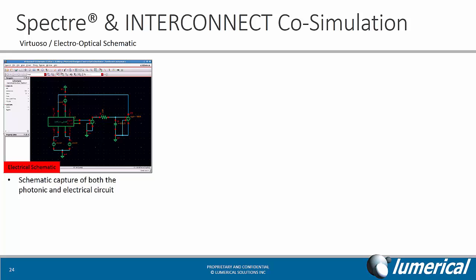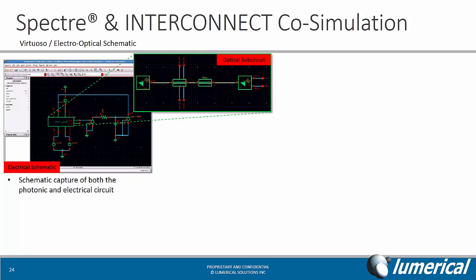We start with schematic capture of both the electrical and optical circuit within Virtuoso. The electrical circuit consists of a simple TIA, a gain amplifier, and some voltage sources. The optical circuit is defined as a sub-circuit with components like a CW laser, modulator, time delay, and photodiode taken from a generic photonic PDK.